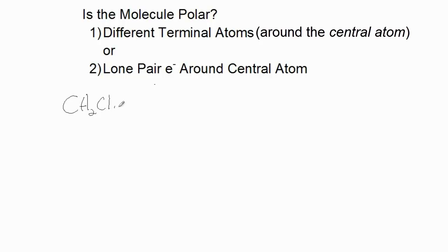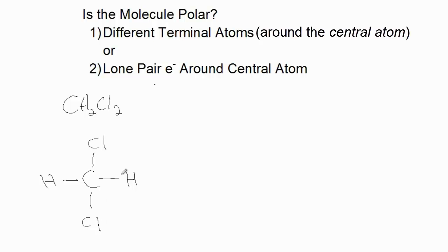Here's CH2Cl2. Carbon is the central atom, and there are two hydrogens as terminal atoms and two chlorines as terminal atoms. Each chlorine has its respective three lone pairs. Criteria 1 is met in this case — the central atom has different terminal atoms. Criteria 2 is not met, because the central atom does not have lone pairs.